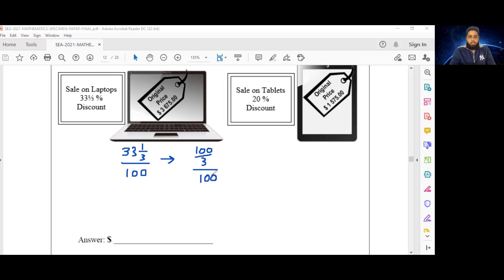All over 100 means the same as divided by 100, so therefore we'll have 100 over 3 divided by 100 over 1.